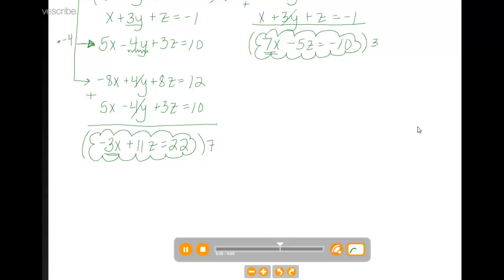What do we get when we multiply this one by 7? We get negative 21x plus 77z equals 22 times 7 is 154. And when we multiply this equation by 3, we're going to get 21x minus 15z equals negative 30.